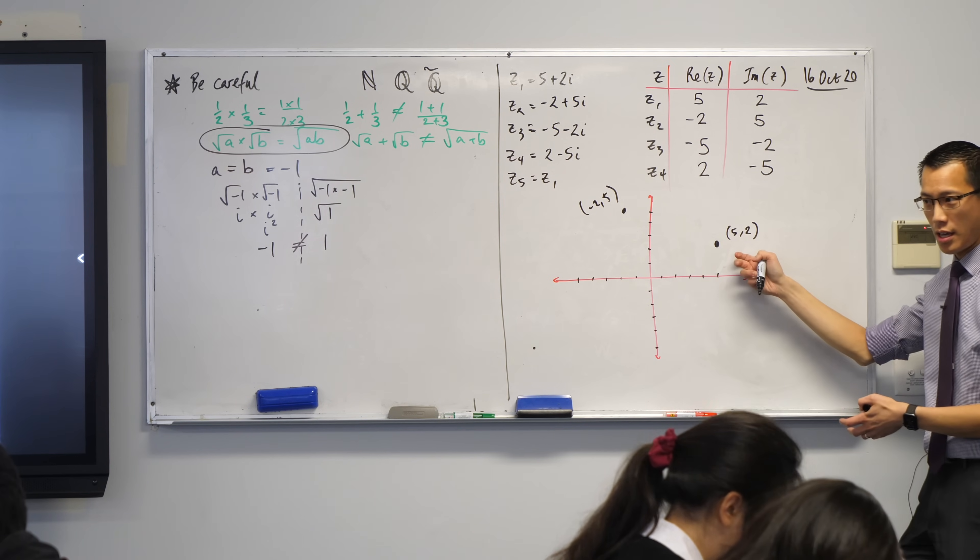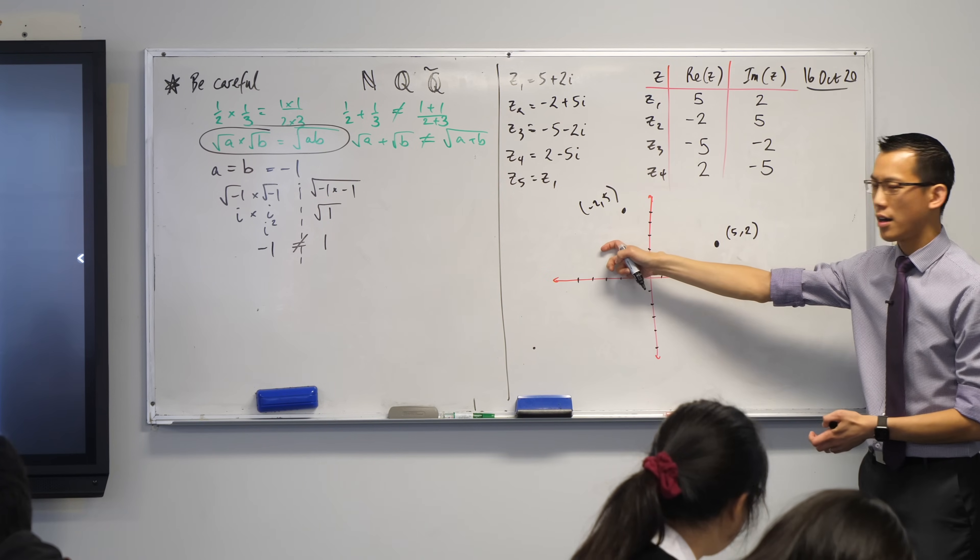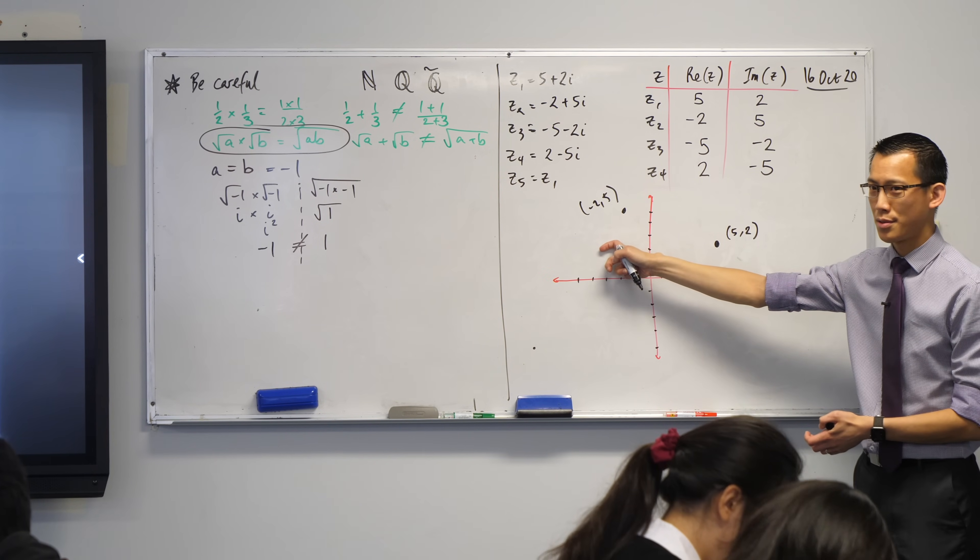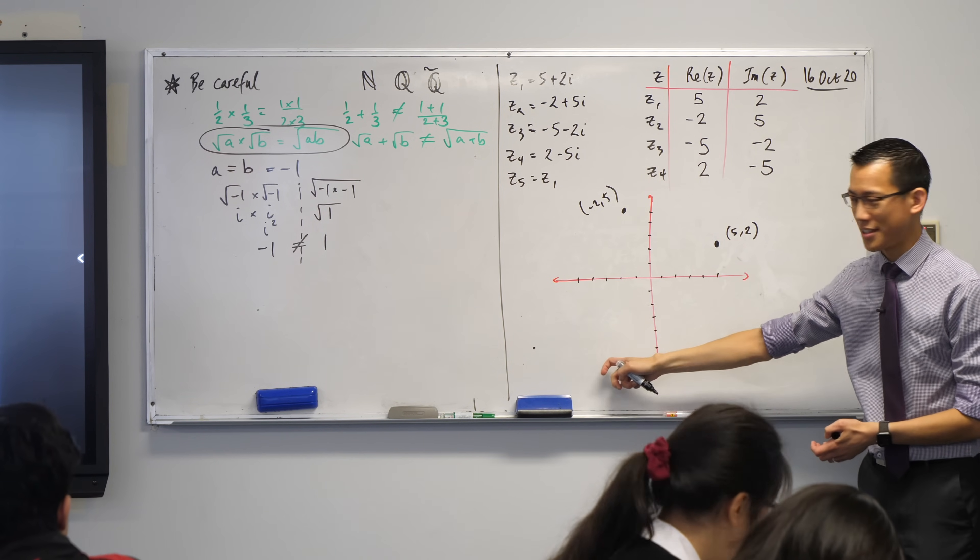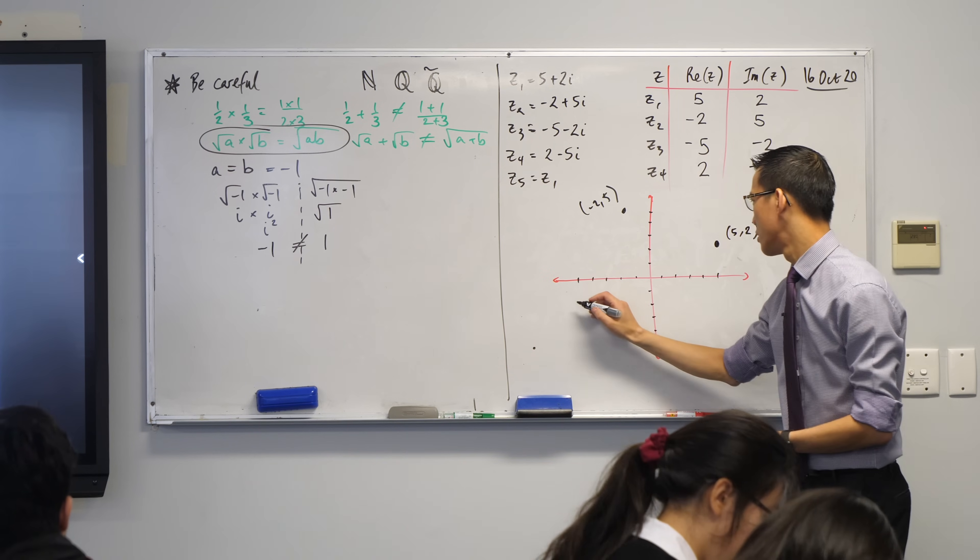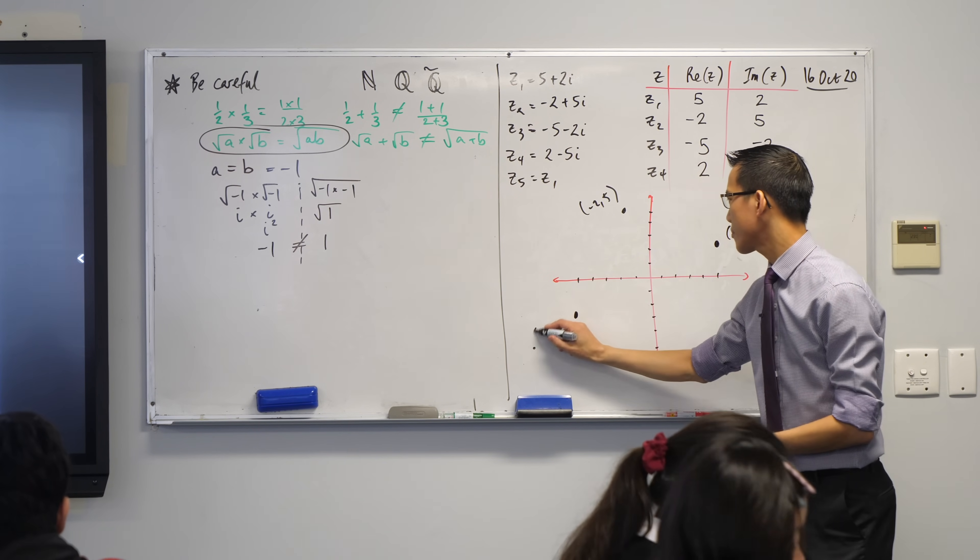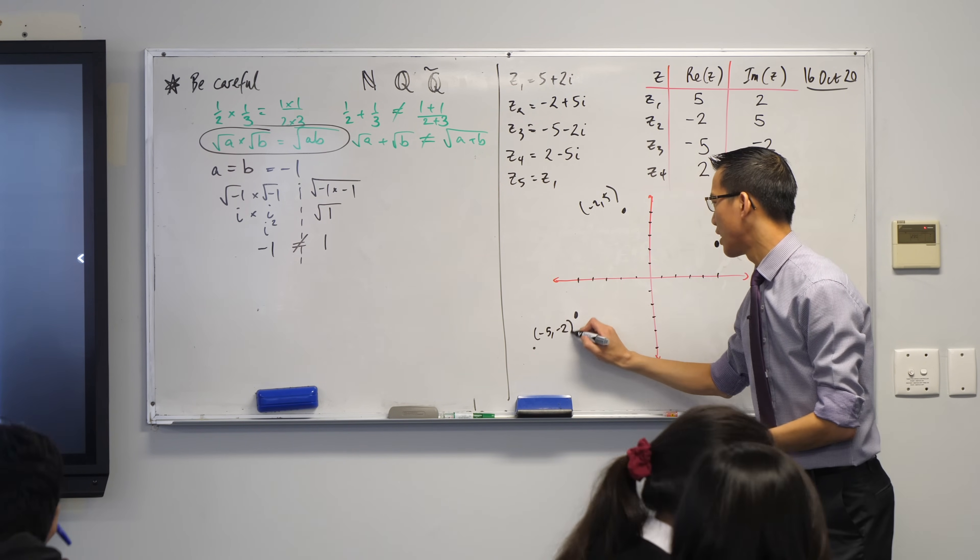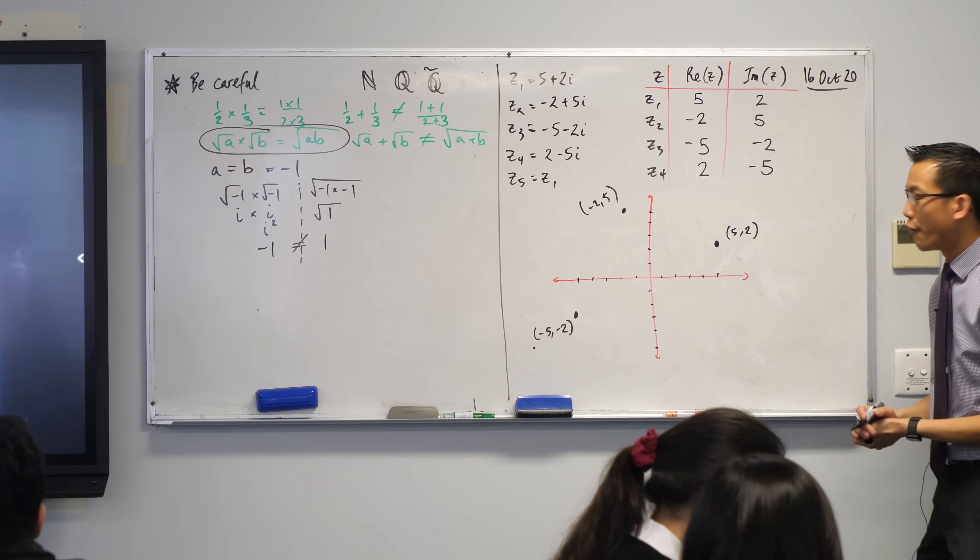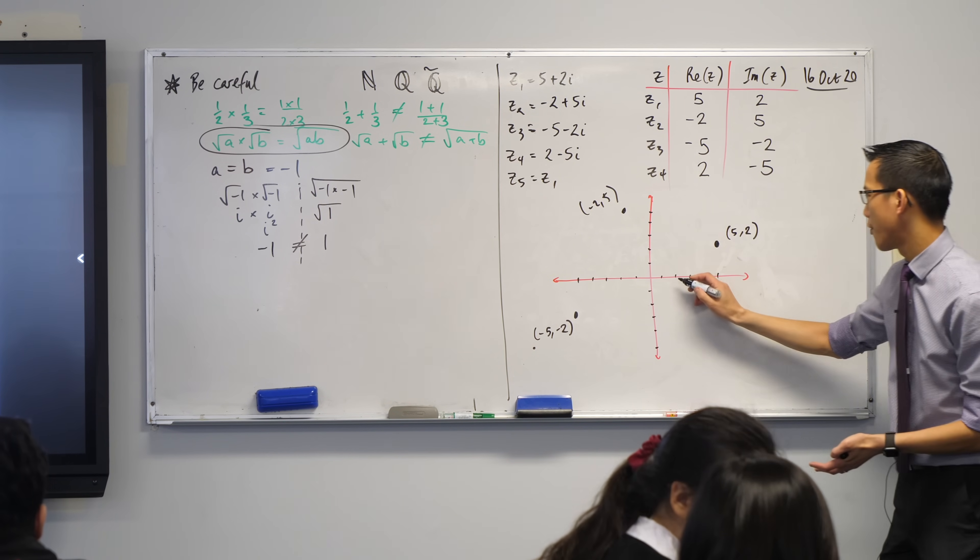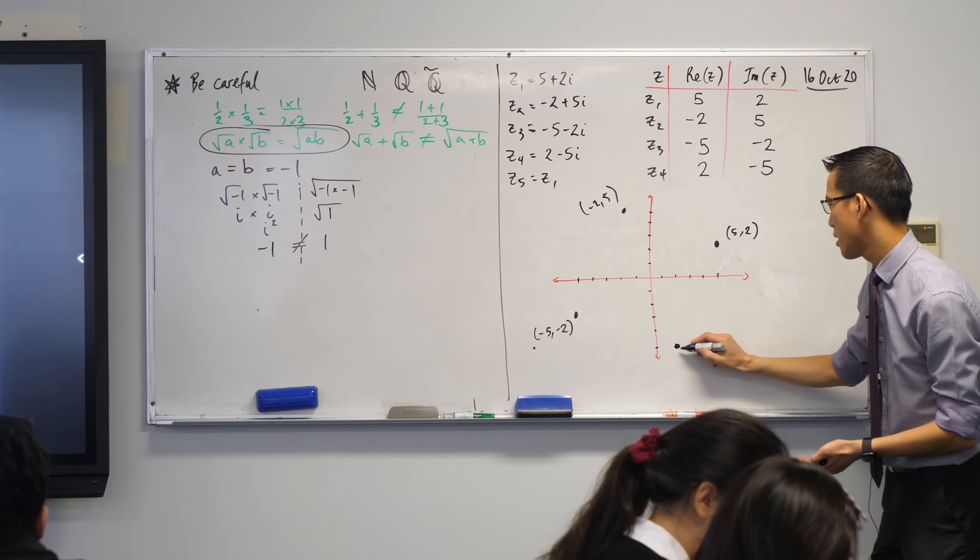This first number is over here. Second number is over here. Third number, third number is down here, isn't it? Negative five, negative two. Some over here. Negative five, negative two. And then finally, two comma negative five will be here.